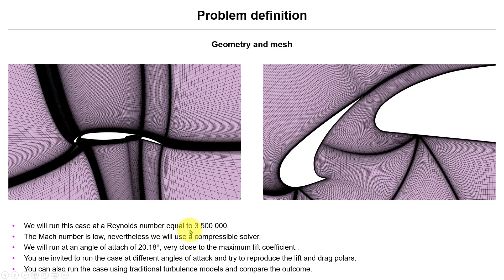This case will run at a Reynolds number of 3.5 million. The Mach number is low so we'll take it as incompressible, nevertheless we're going to use a compressible solver but it can be approximated as incompressible. We'll run at 0.2 Mach number and the particular case we're running is this value.